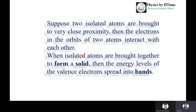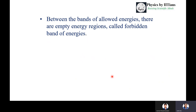Suppose we are forming an ionic crystal — sodium and chlorine atoms are brought close together to form a solid. Then the energy levels of the valence electrons of the sodium atom and chlorine atom interact with each other, and the energy levels of these valence electrons spread into bands. Between two allowed energy levels there are empty energy regions called the forbidden band of energies.